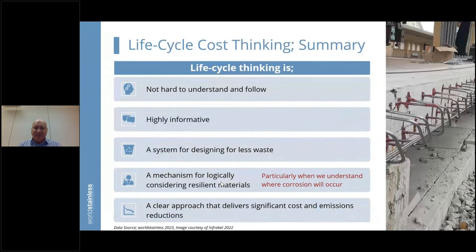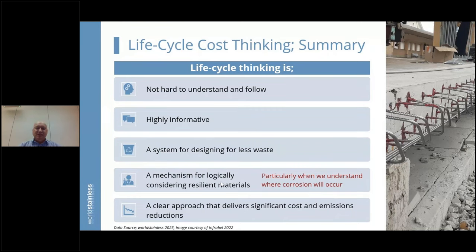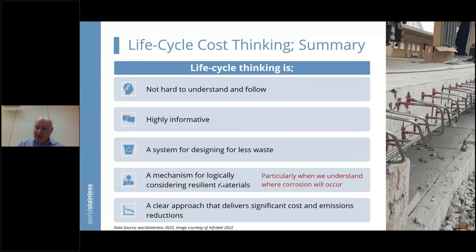Life cycle thinking is not hard to understand. It's a system designed for producing significantly less waste: if you don't have to repair and replace things, you have a much more efficient system, with fewer disruptions to roads and transport systems. It's a logical mechanism for considering resilient materials, and when you understand corrosion, you understand what materials you need. Most importantly, when you think about a big structure like a building or bridge, 60–70% of life cycle emissions occur in the operational phase — not the creation phase — because of repairs. Eliminate repairs, and you reduce emissions massively.